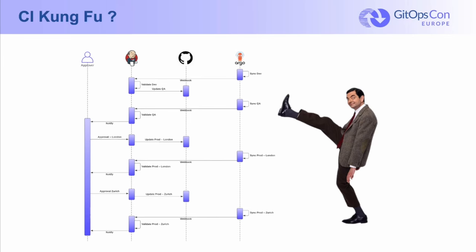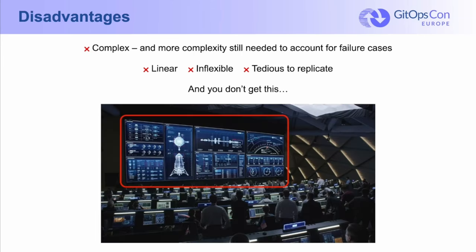Frankly, just explaining this makes me tired. Imagine how little I would care to be stuck having to implement this. But this is what people tend to do. So apart from my personal aversion to this, what's objectively wrong with it? For one thing, it's obviously pretty complex. And this was a simple implementation that really only accounted for the happy path. If you want to also account for the various failure cases, it gets a lot more complex.